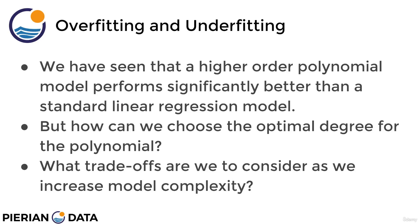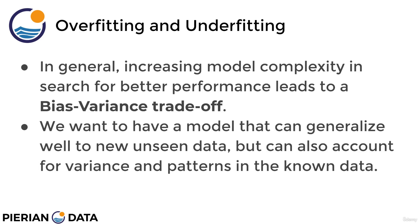We've seen already that a higher order polynomial model performs significantly better than a standard linear regression model from the previous project. But how can we actually choose the optimal degree for the polynomial? Should we go to the third degree, fourth degree, fifth degree? What's to stop us from going to a very large degree and accounting for each possible fluctuation in our data set? What trade-offs are we to consider as we increase model complexity? In general, increasing model complexity in search for better performance leads to what is known as the bias-variance trade-off.